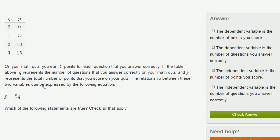The relationship between these two variables can be expressed by the following equation. P is equal to 5Q, where P is the points you get, and Q is the number of questions you answered correctly.